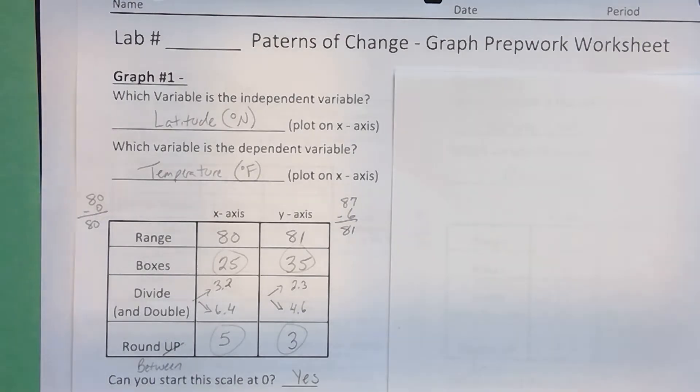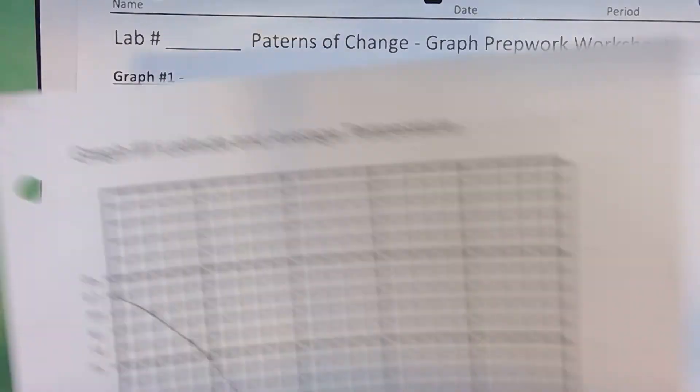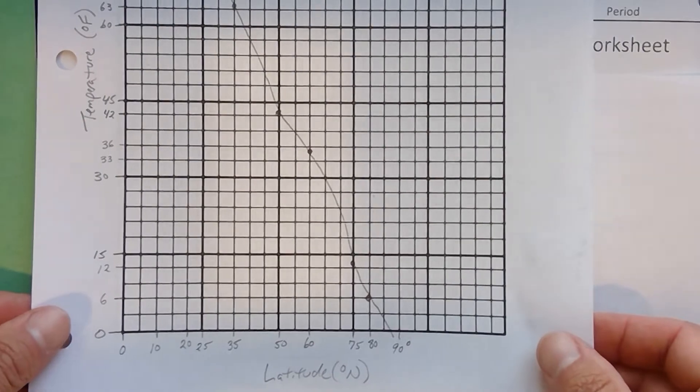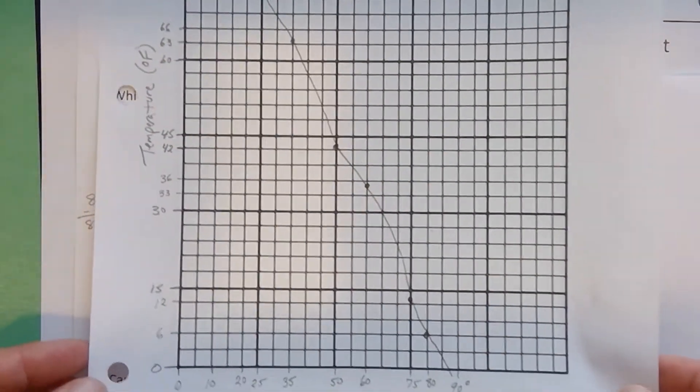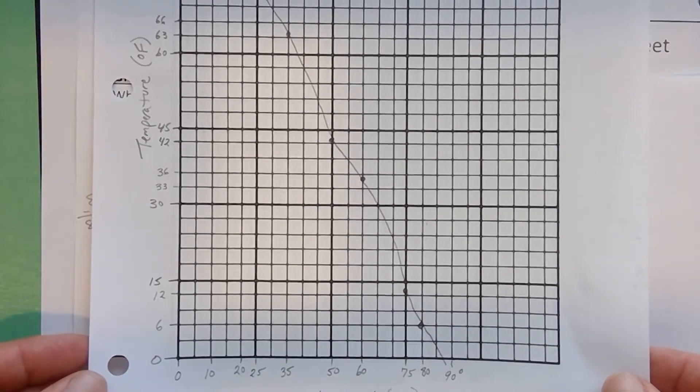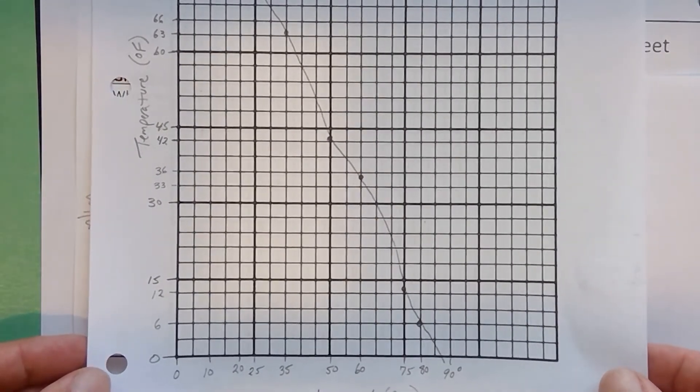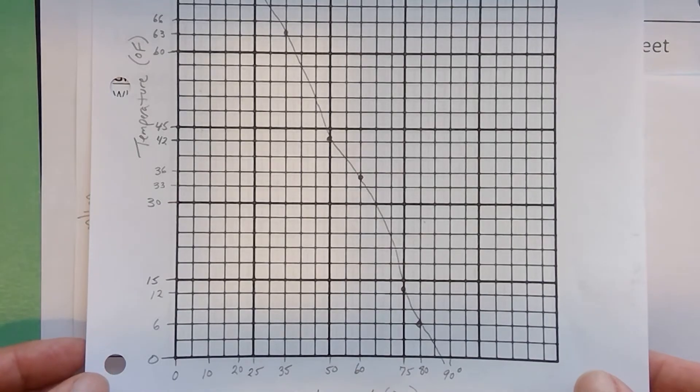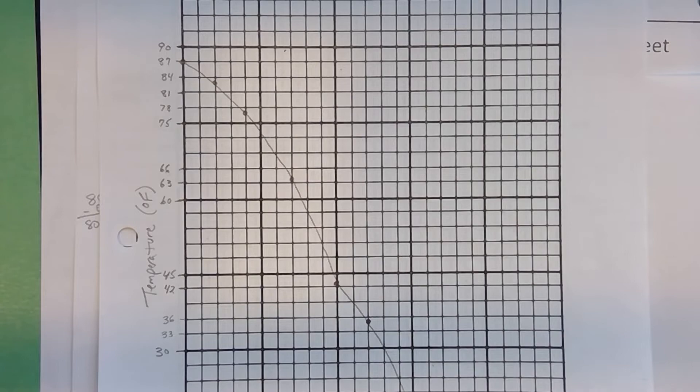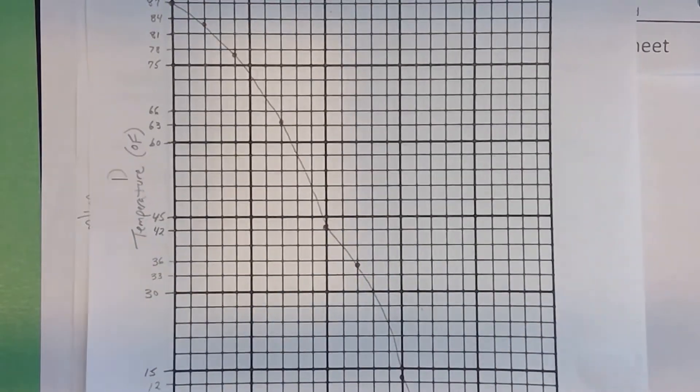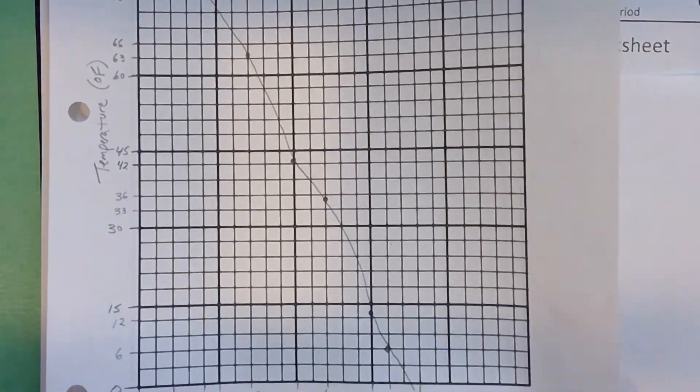Once you plotted out that data, this is what your graph for that should have looked like. So if I look at this, your horizontal axis was going across by 5s. You put a label and a unit on it. The vertical axis was going up by 3s. Obviously, this is an inverse or indirect relationship. Since it doesn't appear to be a nice, perfectly straight line, it's not linear, you connect it with a smooth curve.